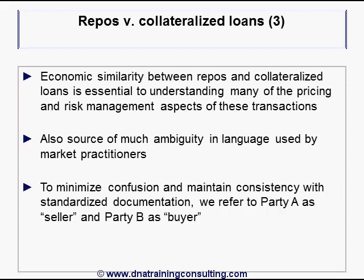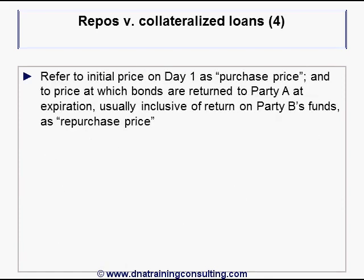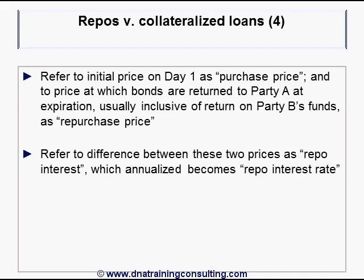To minimize confusion and maintain consistency with standardized documentation, we will refer to Party A as the seller and Party B as the buyer. We will refer to the Alcatel bonds as the bonds, or the purchased securities, or the collateral. We will refer to the initial price on Day 1 as the purchase price, and to the price at which the bonds are returned to Party A at expiration, inclusive of the return on Party B's funds, as the repurchase price. The difference between these two prices is the repo interest, which annualized becomes the repo interest rate.